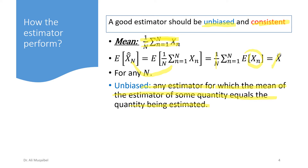Here is an example of a biased estimator: if somebody wants to find the average of their weight and always measures after lunch, they will end up with a biased estimator — it's not the true average weight. Similarly, if the estimator formula includes a plus 1 or plus 2 offset, it is biased because it's not equal to what we want to estimate.